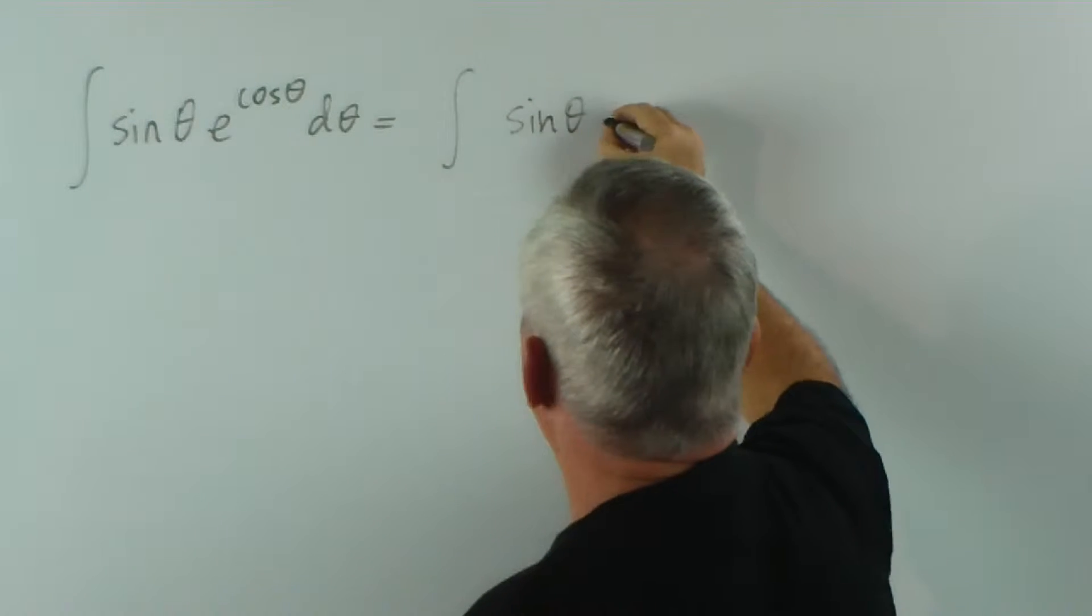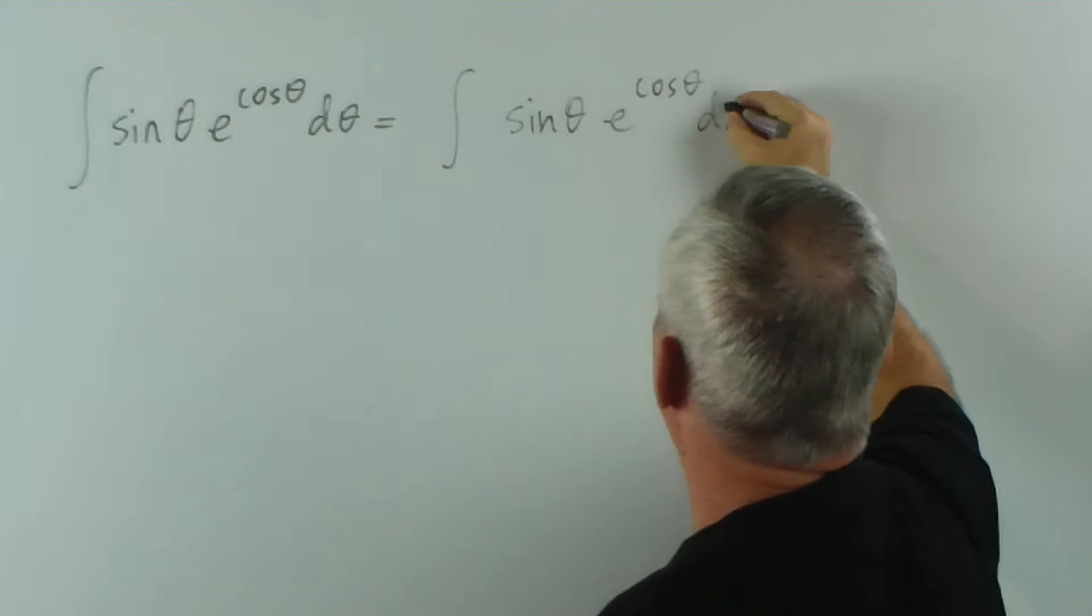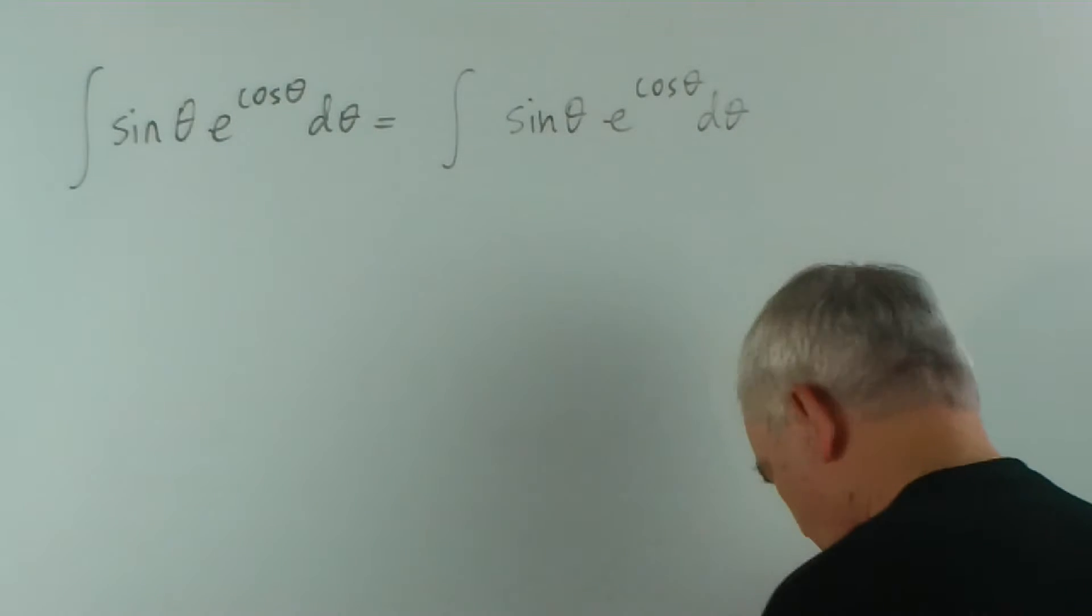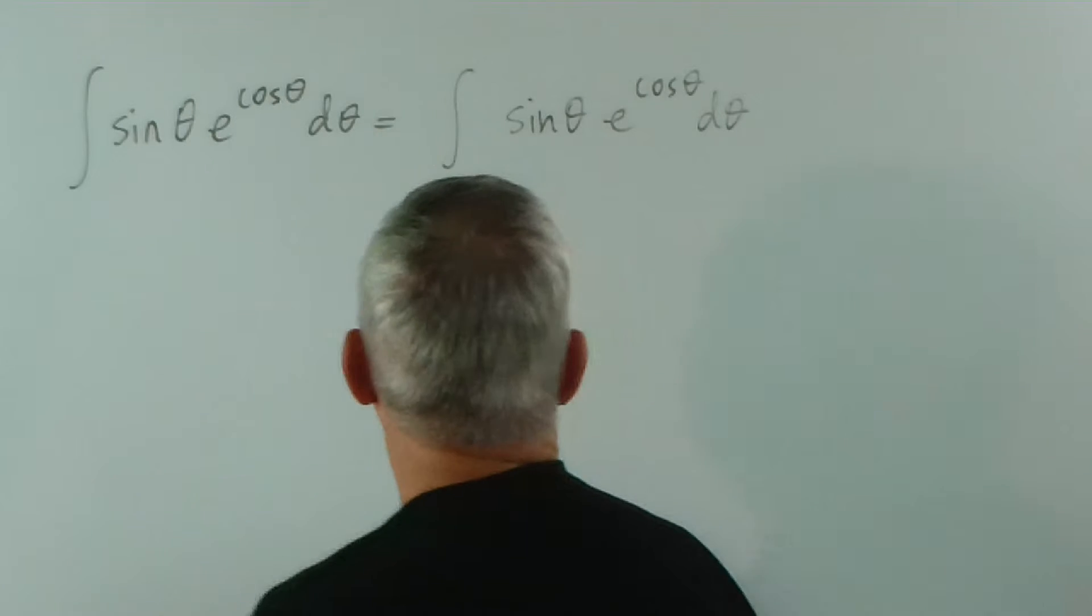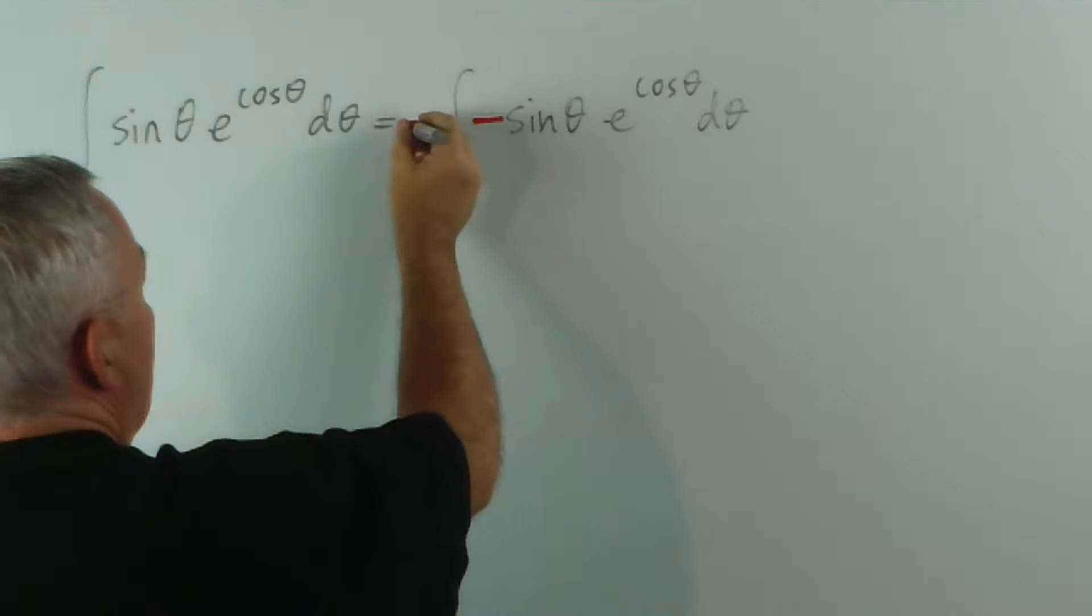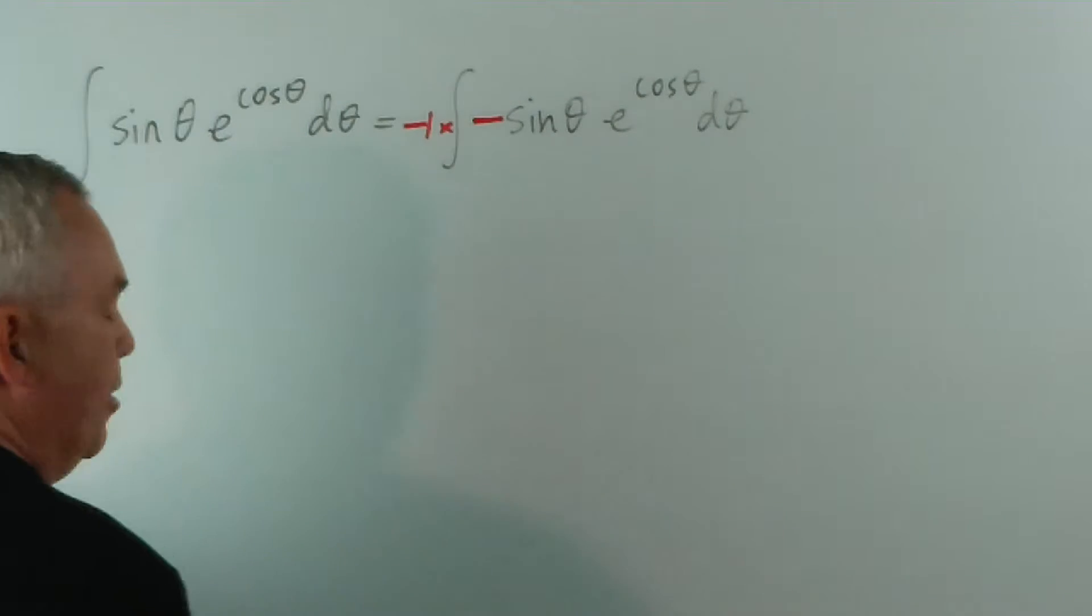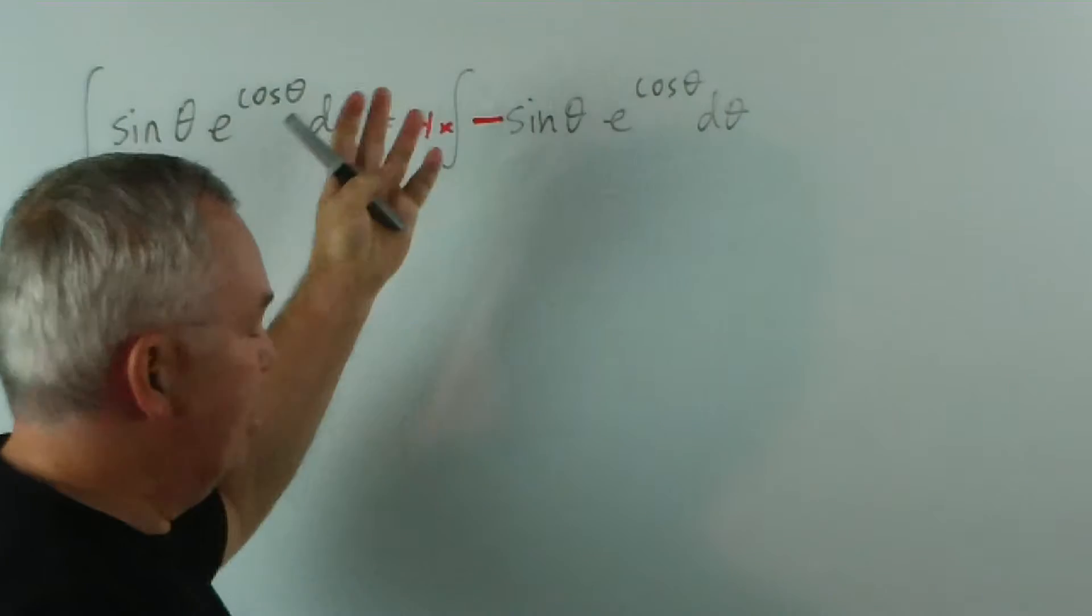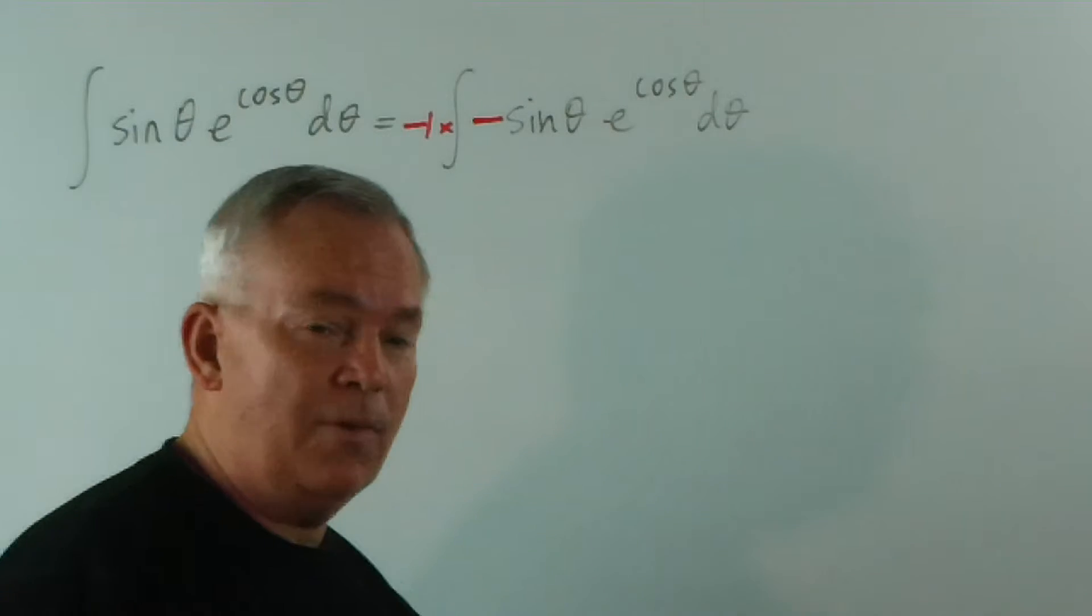This particular integral can just be handled like this. Put a minus here. Put a minus one times that out the front. So a negative times a negative makes positive. So it's really not changed the value.